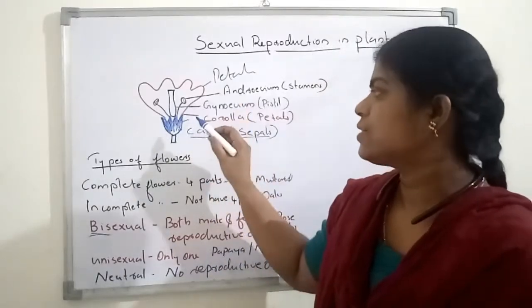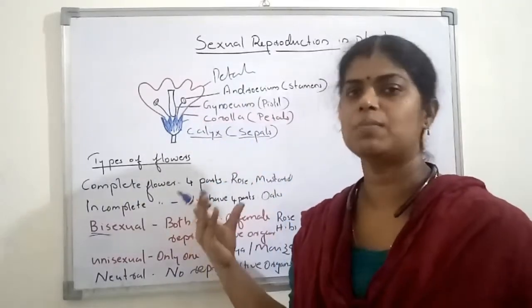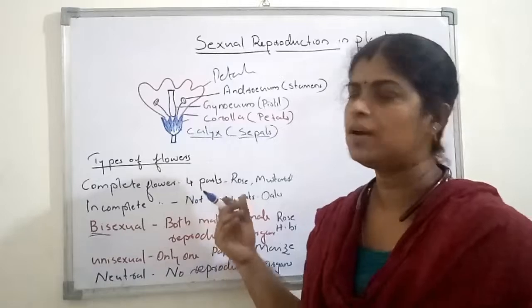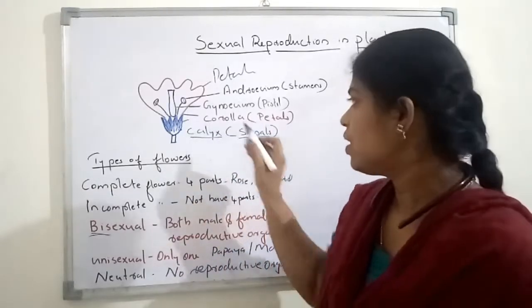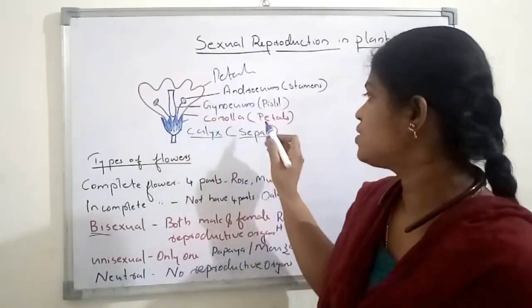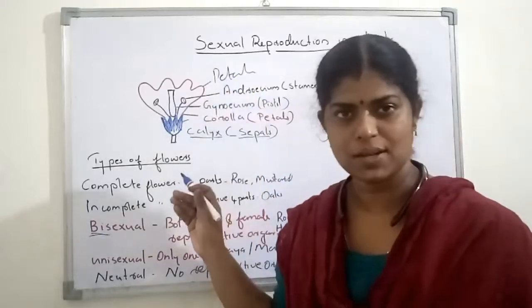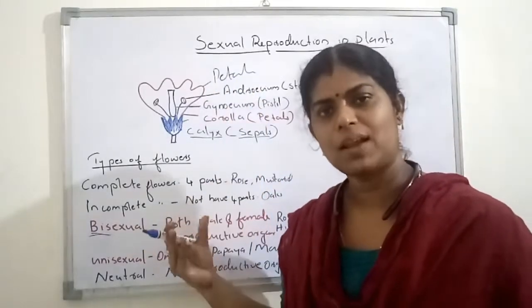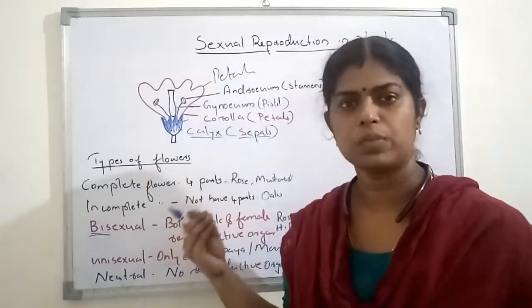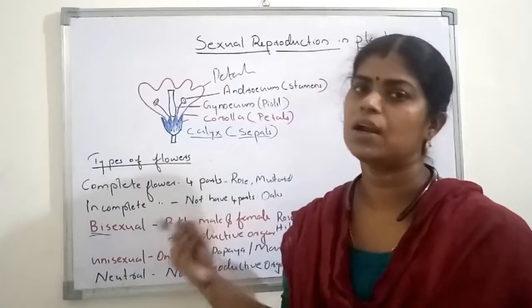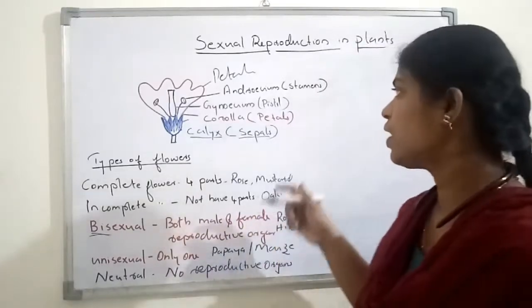Inner to the calyx, you can see the colorful part of the flower, and that is known as the corolla. Corolla is made with so many petals. Petals are fused together to form the corolla, and that will be the colorful part of the flower.